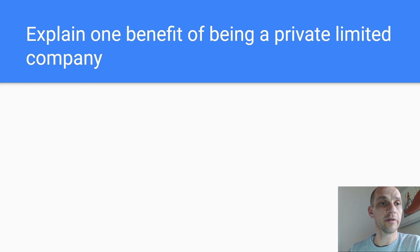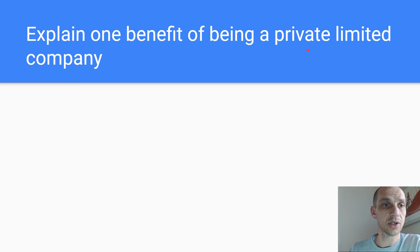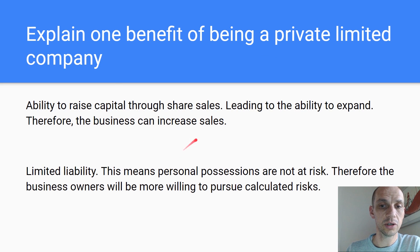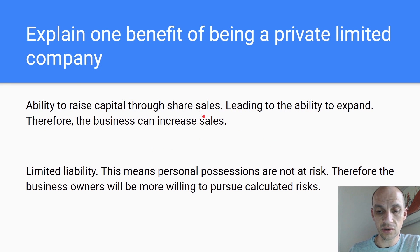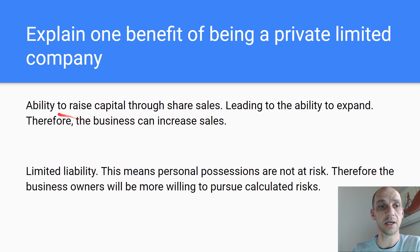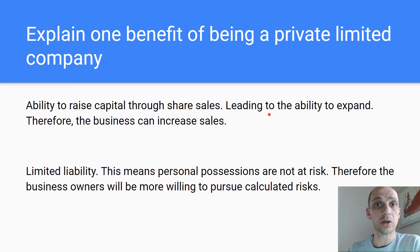Explain one benefit of being a private limited company — you can raise more capital because you can sell shares. Keep these three-mark answers really short and sharp, to the point. You don't need to use all the space given — you could just write on three lines: your identify point, your 'leads to', and your 'therefore'. That works very well.